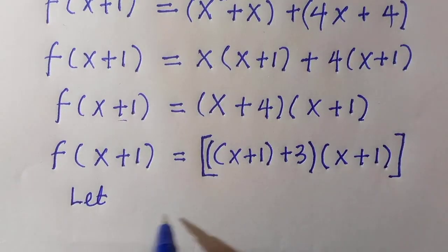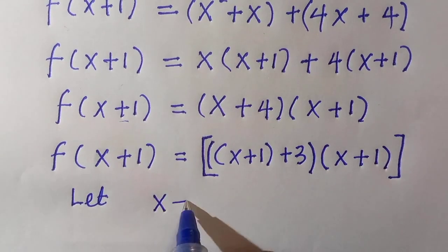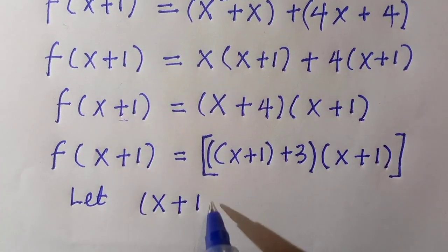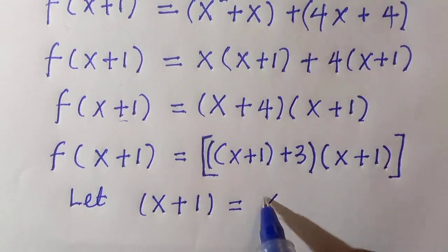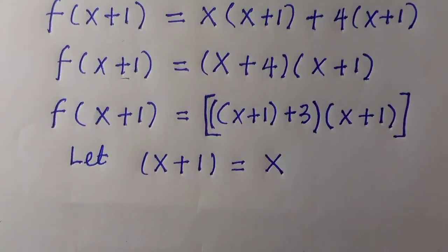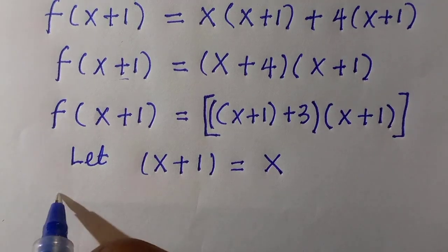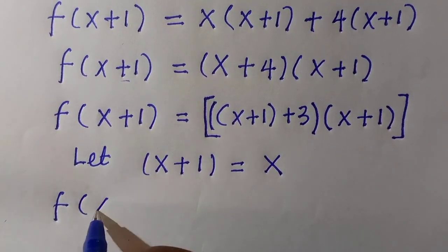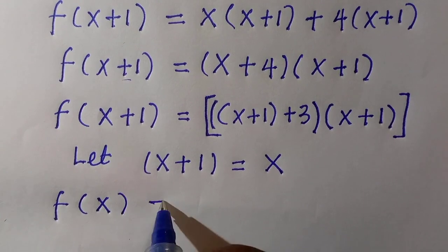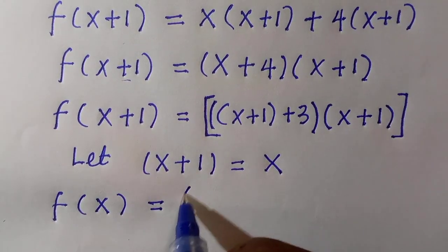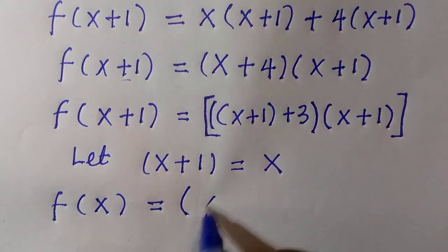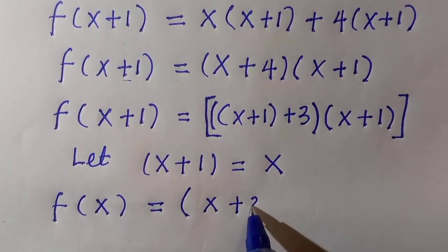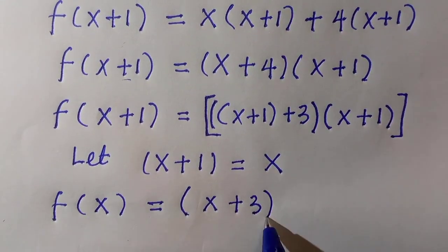then we are going to let x+1 equals x. Since what we want to find is f(x) and both of them are members of real numbers, that's why we are going to replace it. So here is f(x) equals, instead of x+1, we are going to have it as (x+3). Then (x+1) here is going to remain as x.